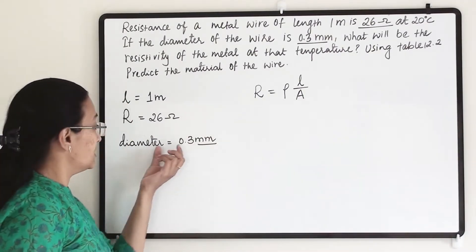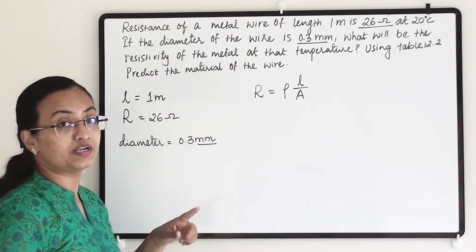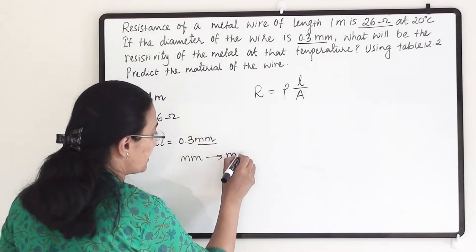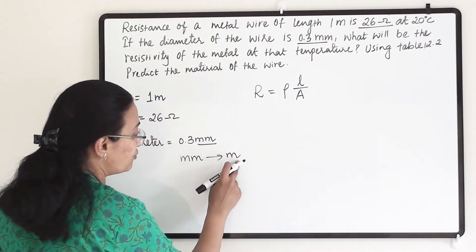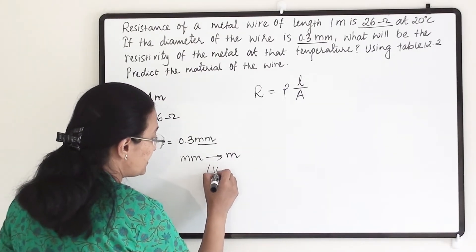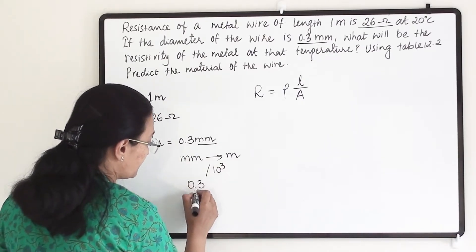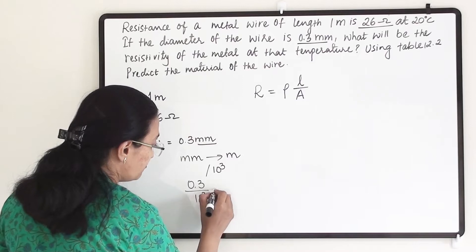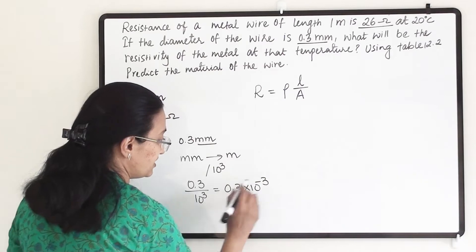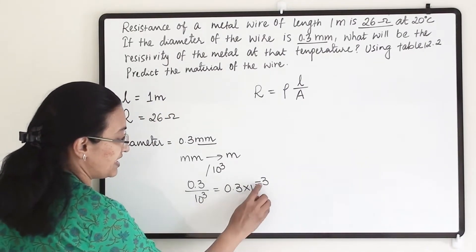Here they have given diameter in millimeters, so we have to convert it into meters. Millimeter to meter conversion: this is a small unit going to a bigger unit, so we divide by 10 raise to 3. When we divide 0.3 by 10 raise to 3, we get 0.3 into 10 raise to minus 3.